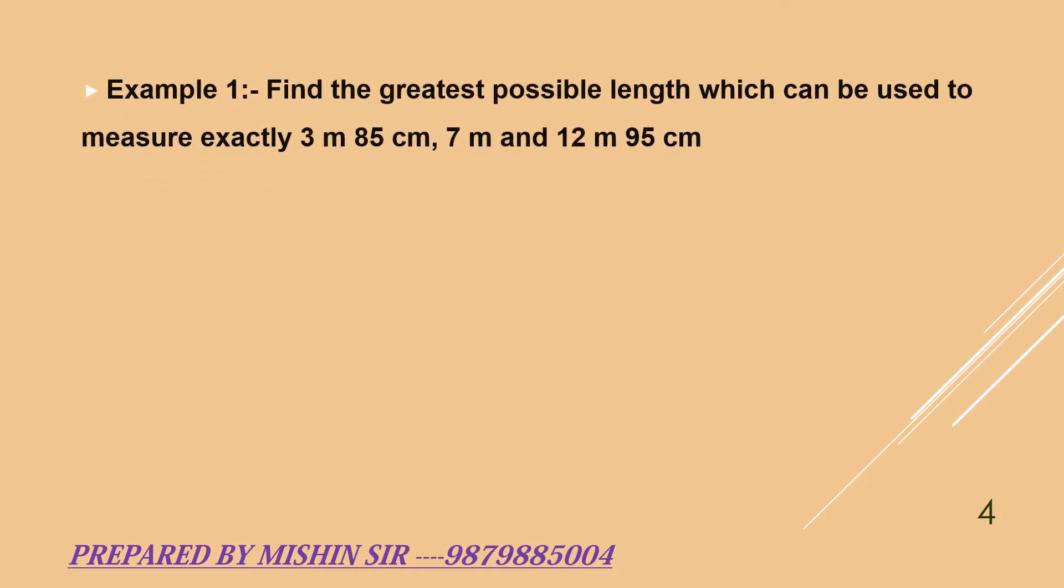Example 1. Find the greatest possible length which can be used to measure exactly 3 meter 85 cm, 7 meter and 12 meter 95 cm. Now we arrange them in ascending order. A is equal to 3 meter 85 cm, B is equal to 7 meter and C is equal to 12 meter 95 cm.